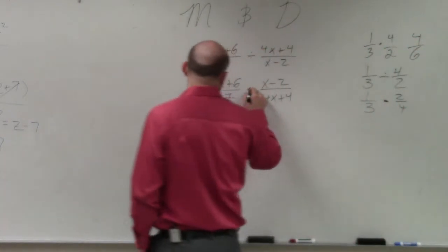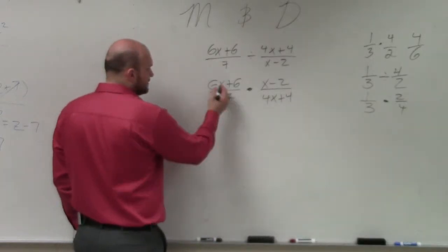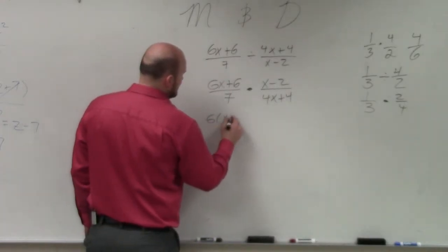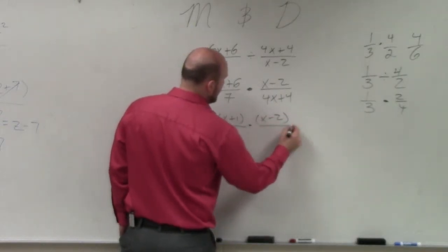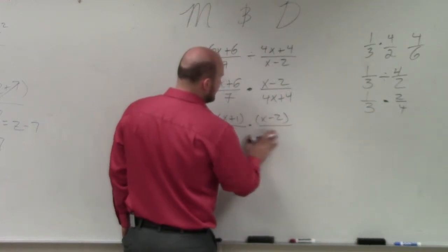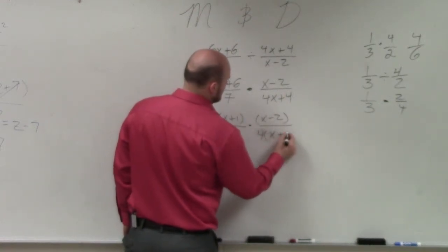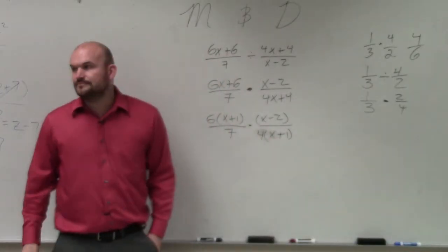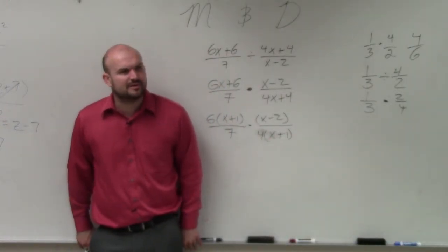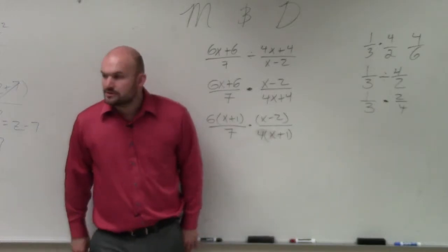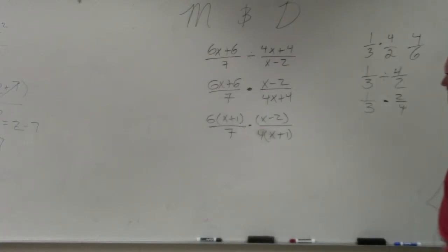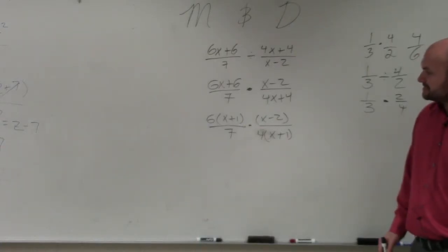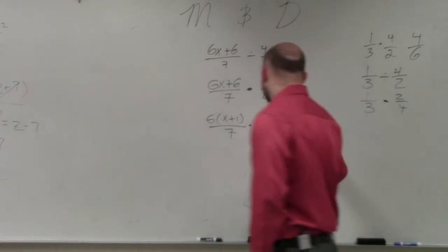So now we're just going to apply our factoring. Up here I can factor out a 6, so I'm left with (x + 1) over 7. Over here I have (x - 2), and I factor out a 4. So therefore, you can see here, I can divide out the (x + 1)'s.